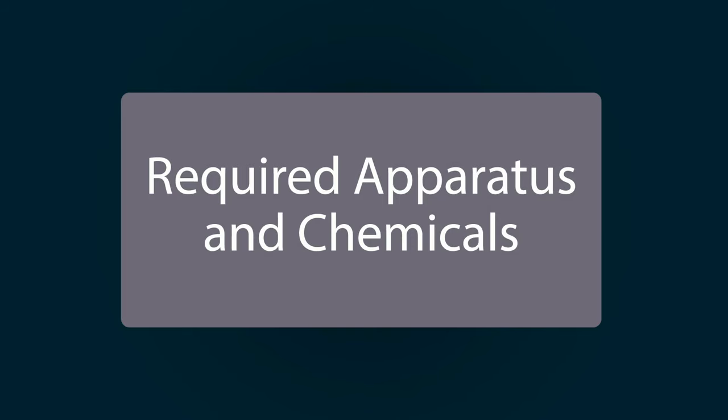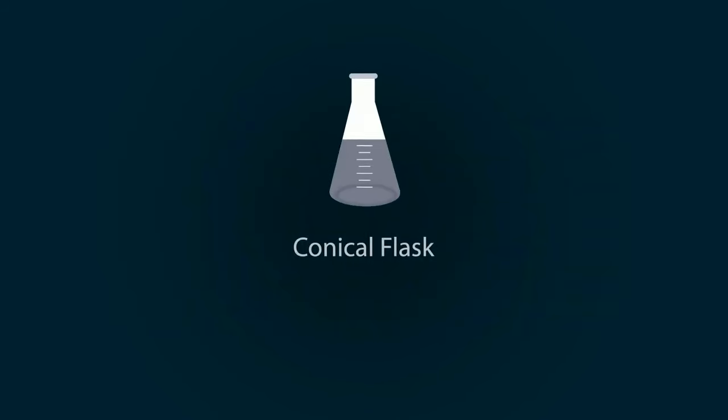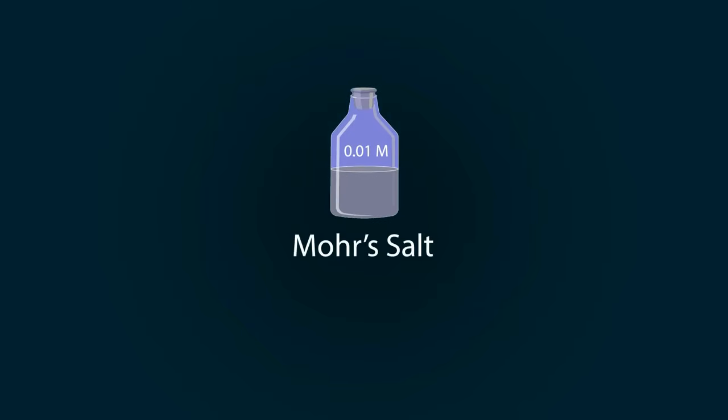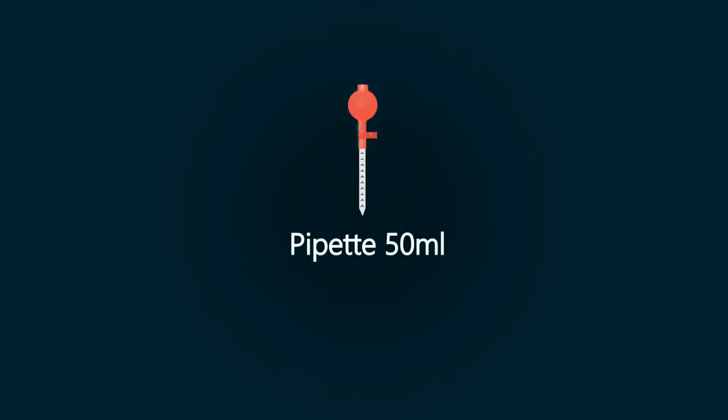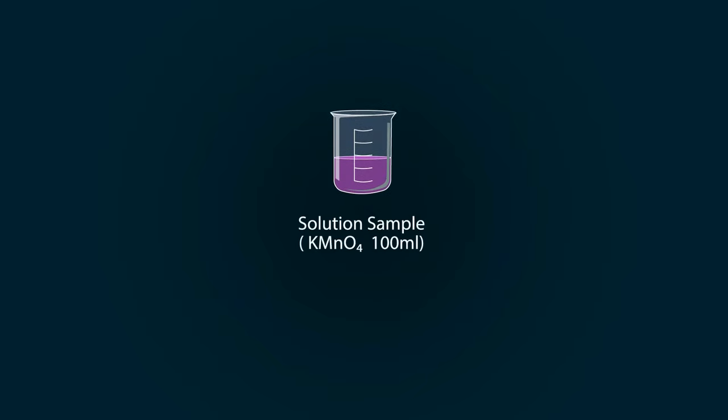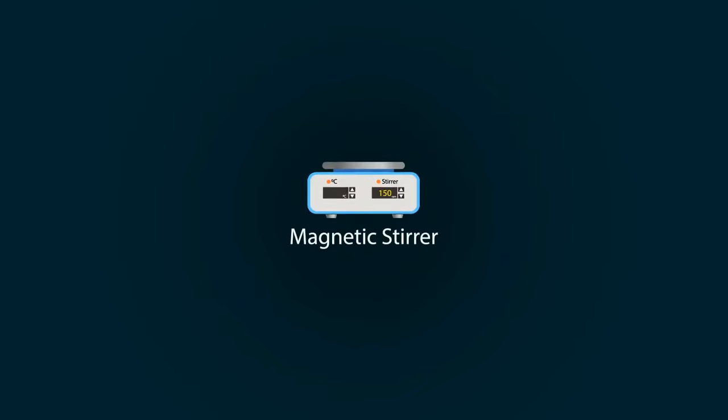The required apparatus and chemicals include a conical flask, Mohr's salt of 0.01 molarity, dilute H2SO4, a 50 milliliter pipette, an iron stand, a 50 milliliter burette, a funnel, KMnO4 solution with unknown concentration, a magnetic stirrer, and a magnetic bar.